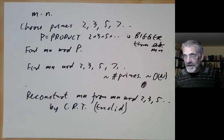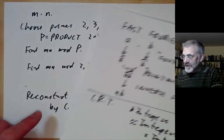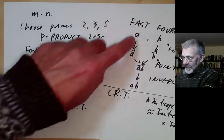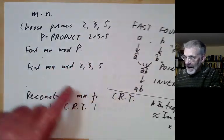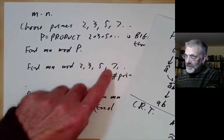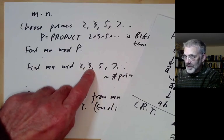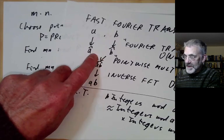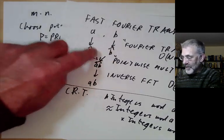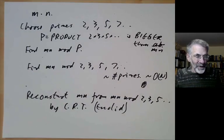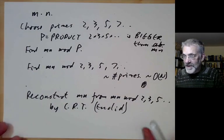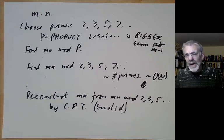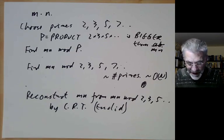This method is a bit like the Fast Fourier Transform. In both cases you do some preliminary transform — either reducing m and n modulo lots of primes or taking the Fourier transform — and then you're reduced to doing lots of individual multiplications. Although the FFT and the Chinese Remainder Theorem method look rather different, they're somehow both using the same key idea.